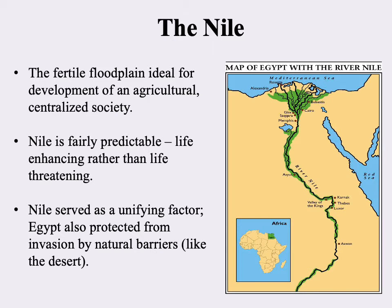This was a very ideal region for the development of an agricultural centralized society. And this is where you have a significant difference from Mesopotamia: the Nile is fairly predictable. It does flood, but it does so pretty much the same way every year at the same time. The forces of nature are seen as being more life-enhancing rather than life-threatening.